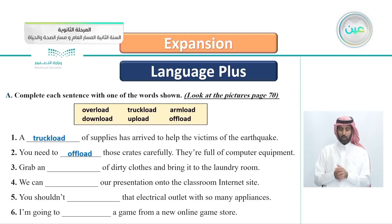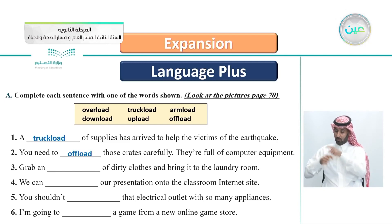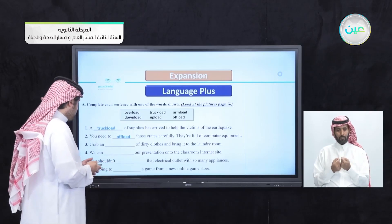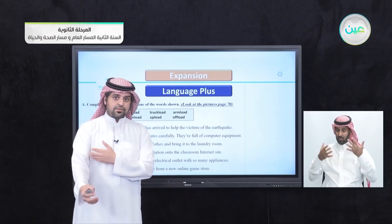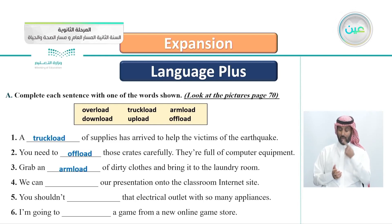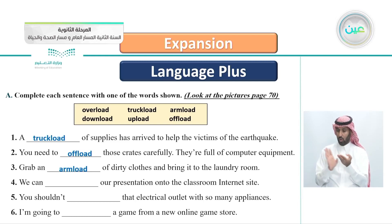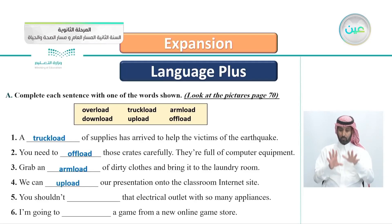Number three: 'Grab an ___ of dirty clothes and bring it to the laundry room.' The answer is armload. Grab an armload of dirty clothes and bring it to the laundry room. Try to pick up your dirty clothes until it reaches the highest point of your arm — this is an armload. Number four: 'We can ___ our presentation onto the classroom internet site.' Yes — we can upload our presentation so everyone can see it.